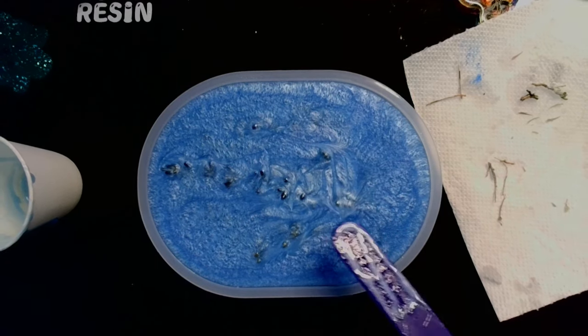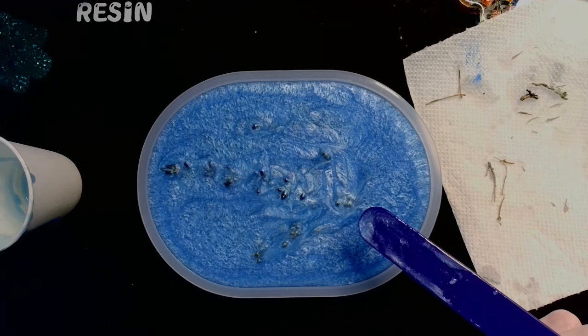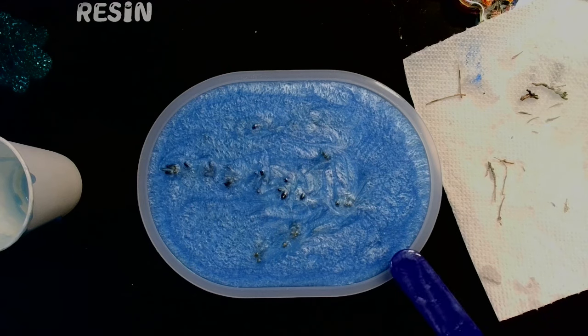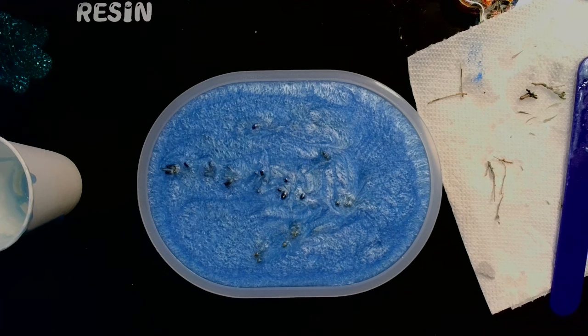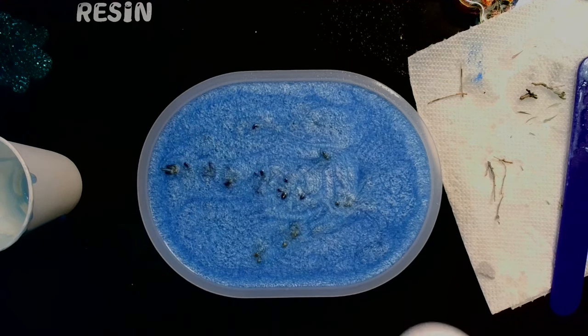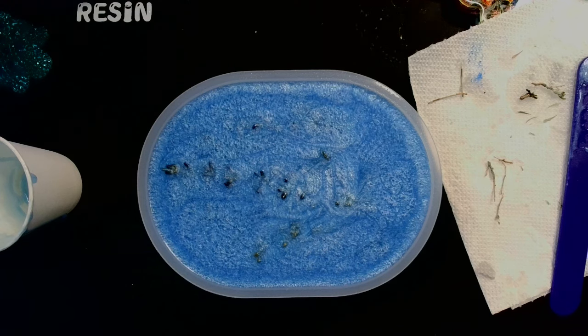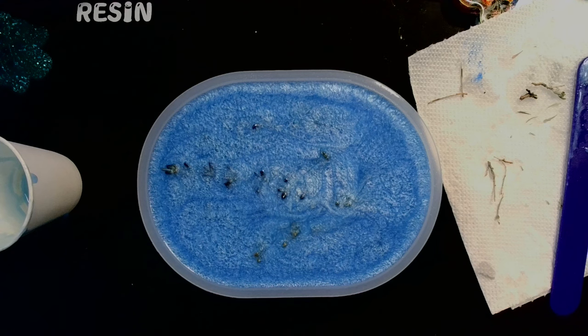That looks good. So this tray holds five ounces—that's good to know. I'll have to remember that and mark it on the back so I remember for next time. I'm going to go ahead and give it a spritz with alcohol to pop some bubbles, and I will see you guys back for the demold. See you soon.